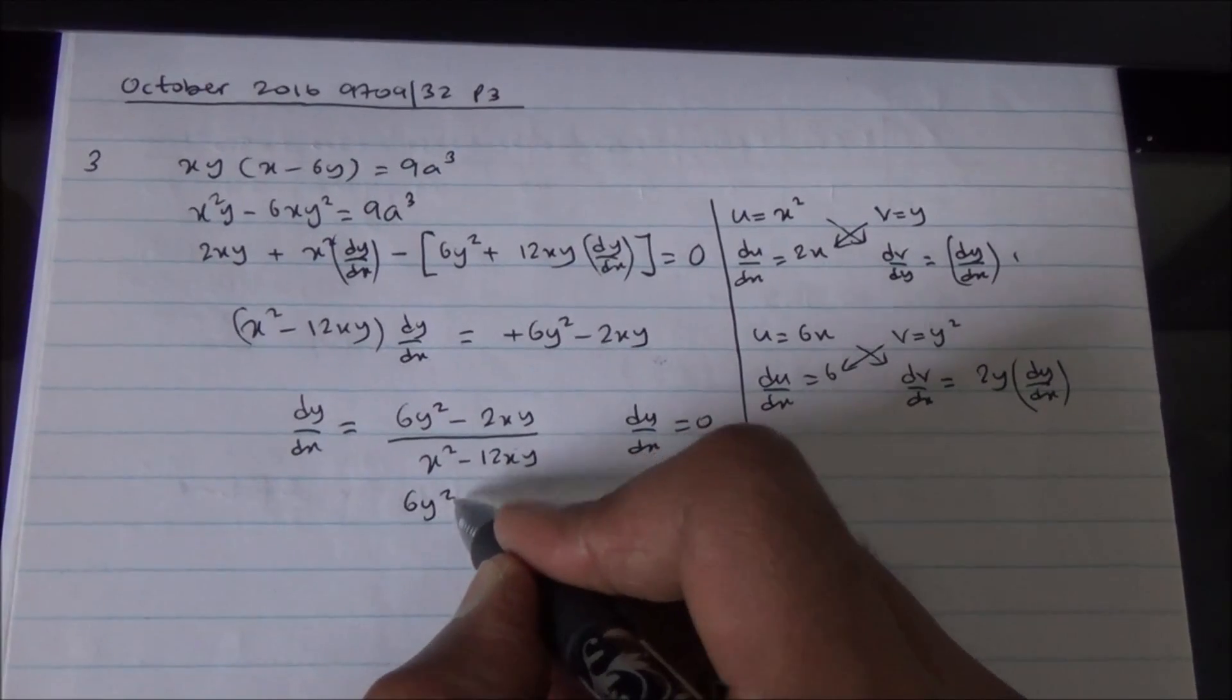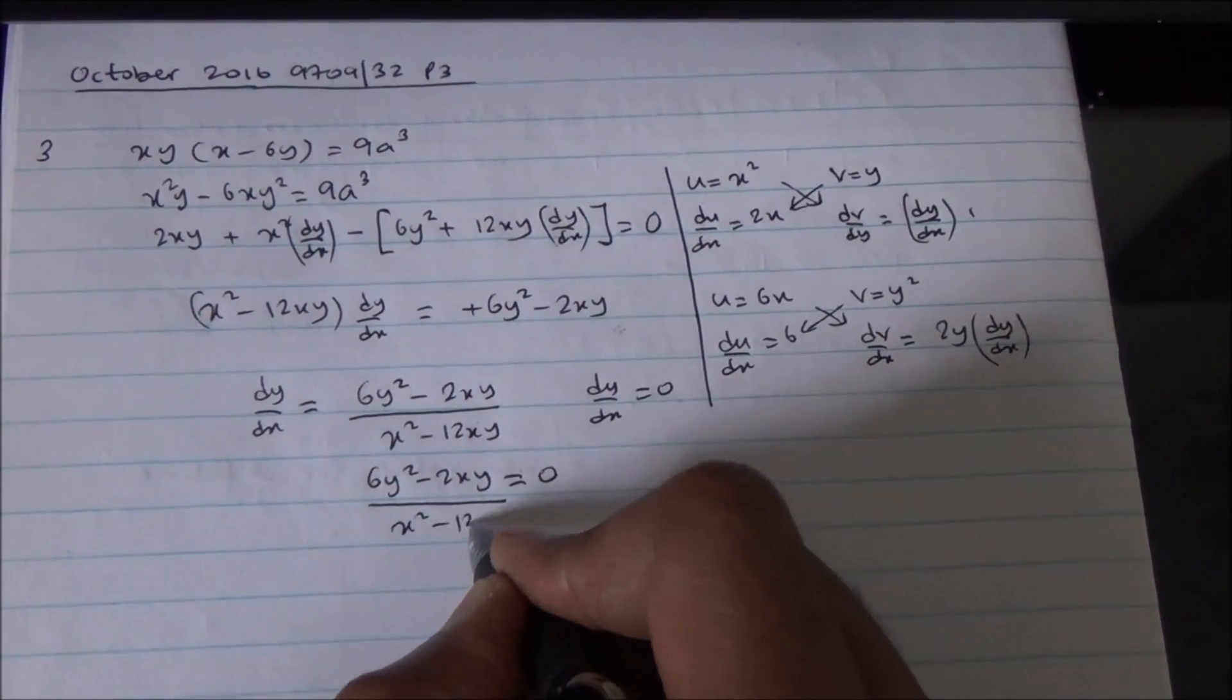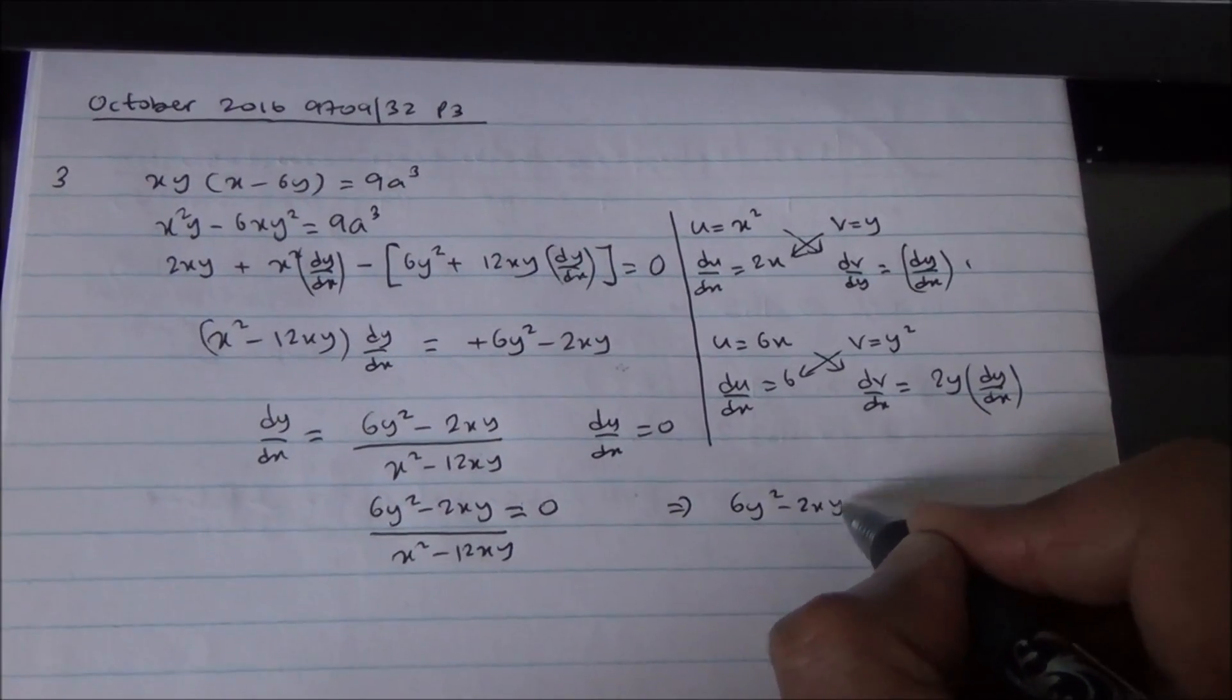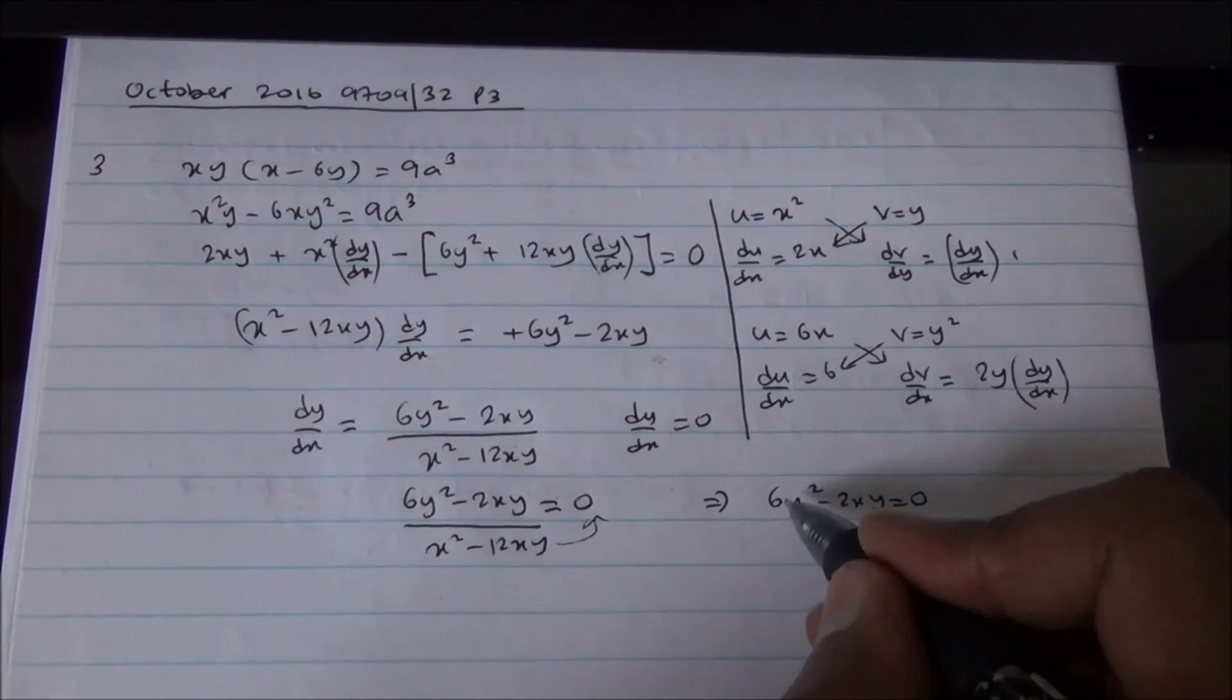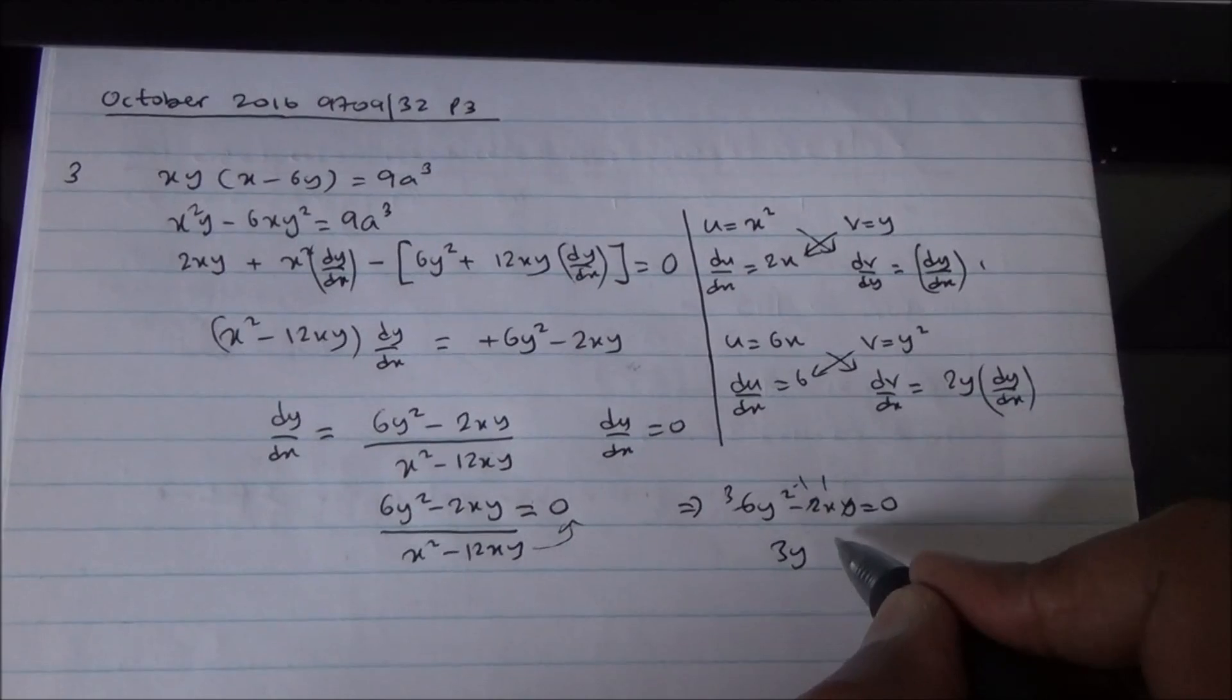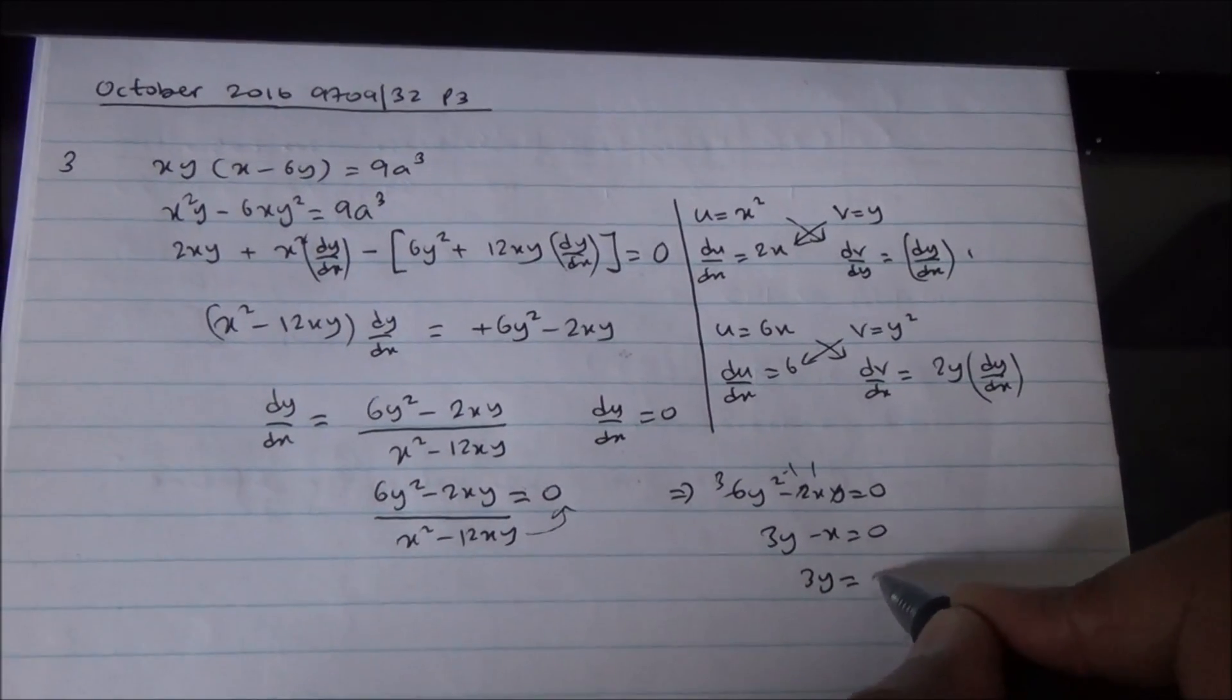Now, 6y squared minus 2xy is equal to 0. This is going to disappear anyway, but let me just write it to avoid any confusion. So, 6y squared minus 2xy is equal to simply 0, because 0 times this is going to be 0. So, the 2 can go, and I've got 3 here, the y can go, and I've got y here. So, 3y minus x is equal to 0. So, 3y is going to equal to x.